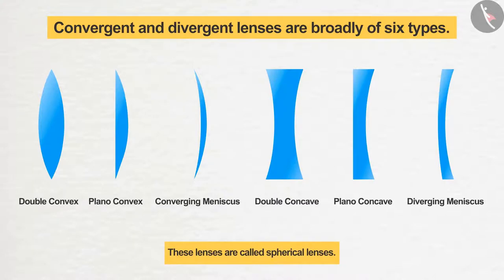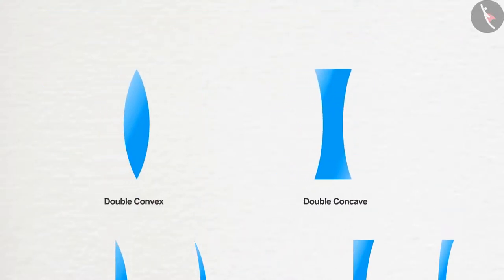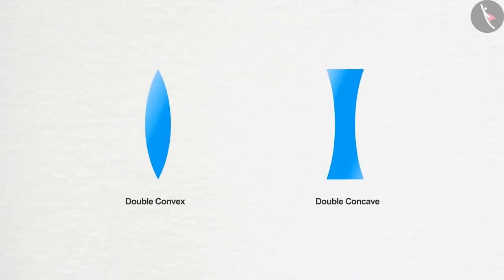Out of these six types of lenses, we will only talk about two in our upcoming videos: double convex and double concave. They are usually known as convex lenses and concave lenses.